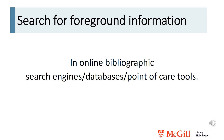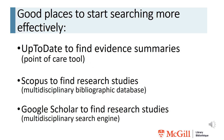The best place to look for foreground information is in online bibliographic search engines, databases, or what we call point of care tools. You're probably used to Googling for information, but here are some good places to start searching more effectively for research evidence. UpToDate can be used to find evidence summaries and is considered a point of care tool. You can also search Scopus, a multidisciplinary bibliographic database, or Google Scholar, a multidisciplinary search engine, to find research studies. In the search modules, we're going to look at more specific and better databases for finding answers to nursing questions.